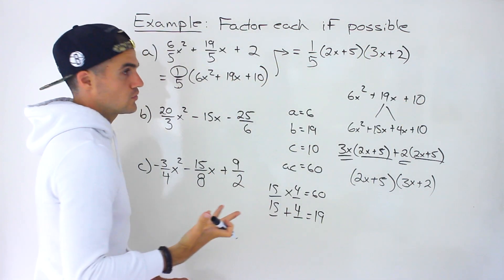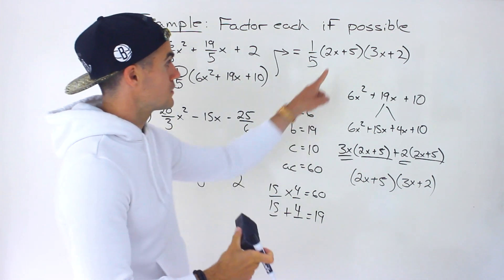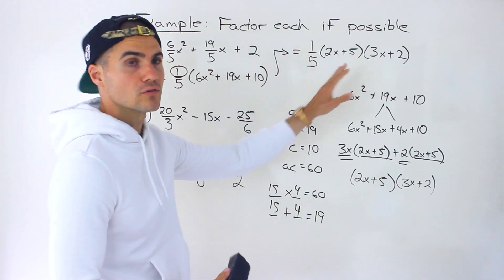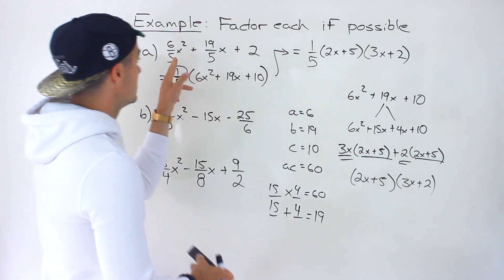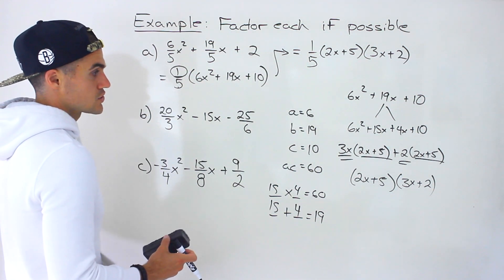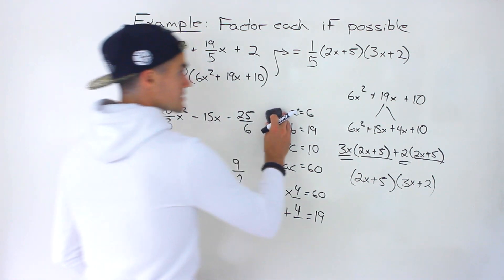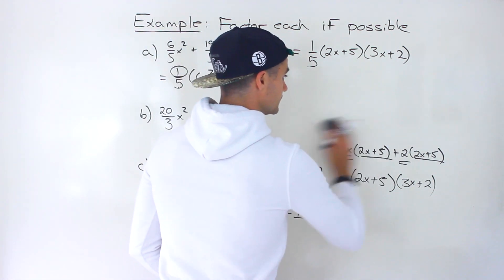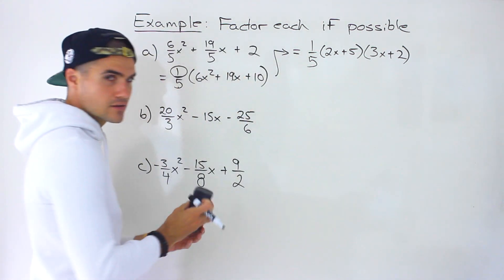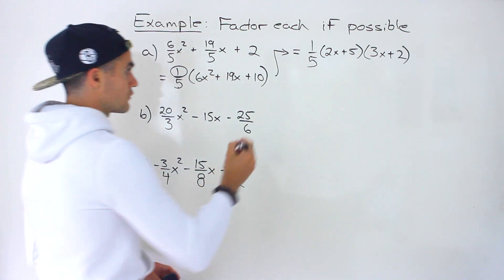If you want, you could foil out those two brackets and then distribute the 1 over 5 to verify you get back the initial expression. So that's basically the process — not too bad. It's just that at the beginning there's that preliminary step of working with the fraction.